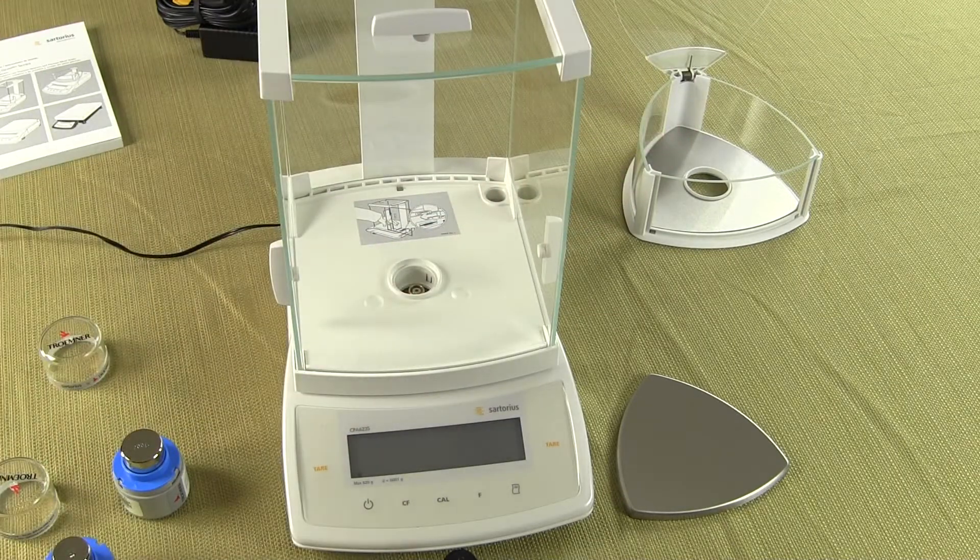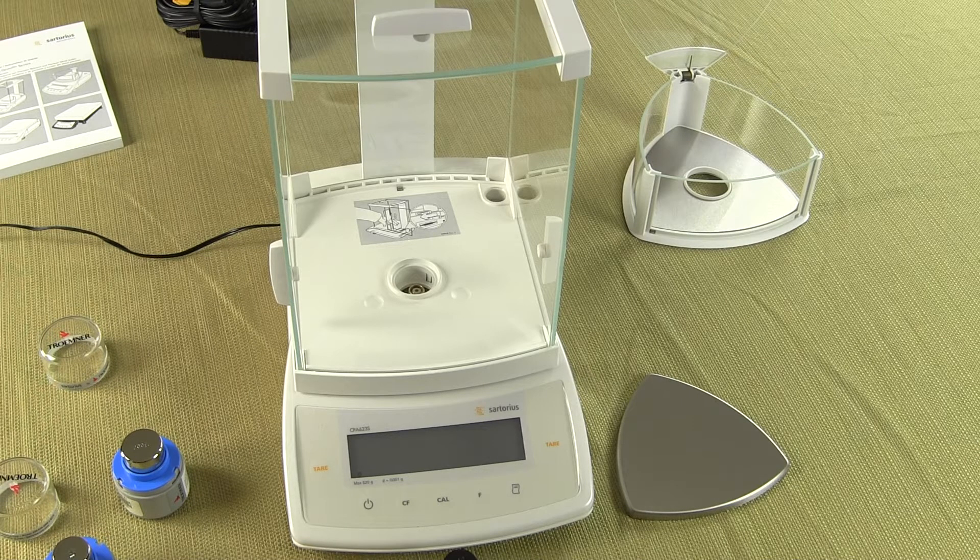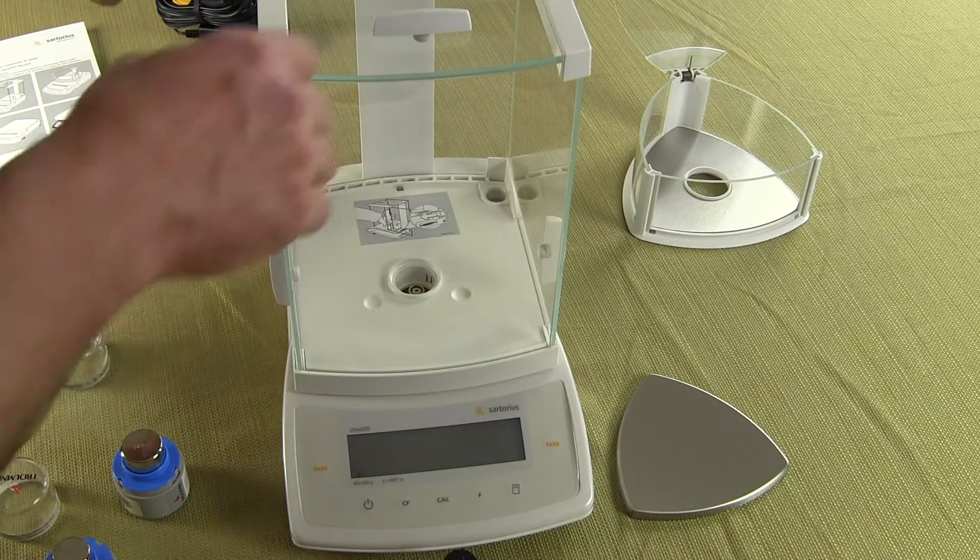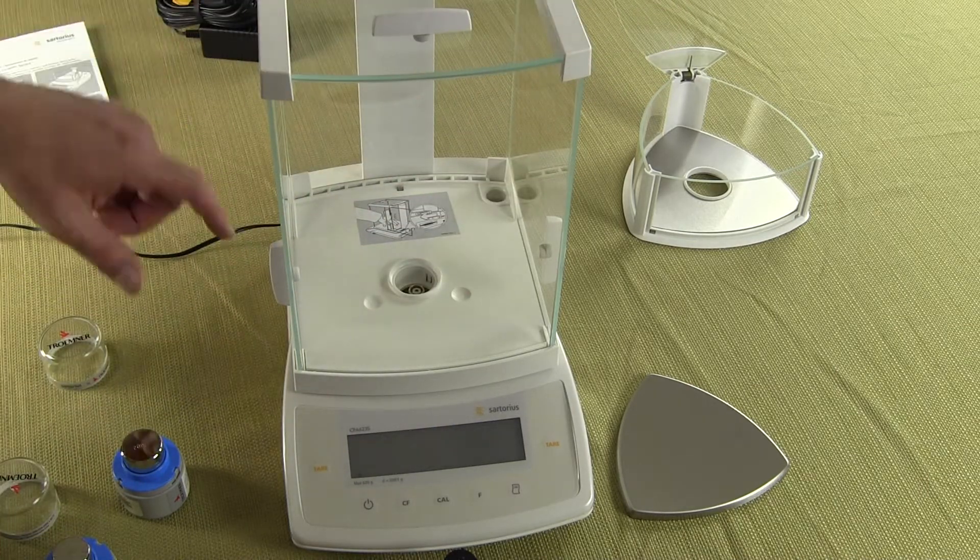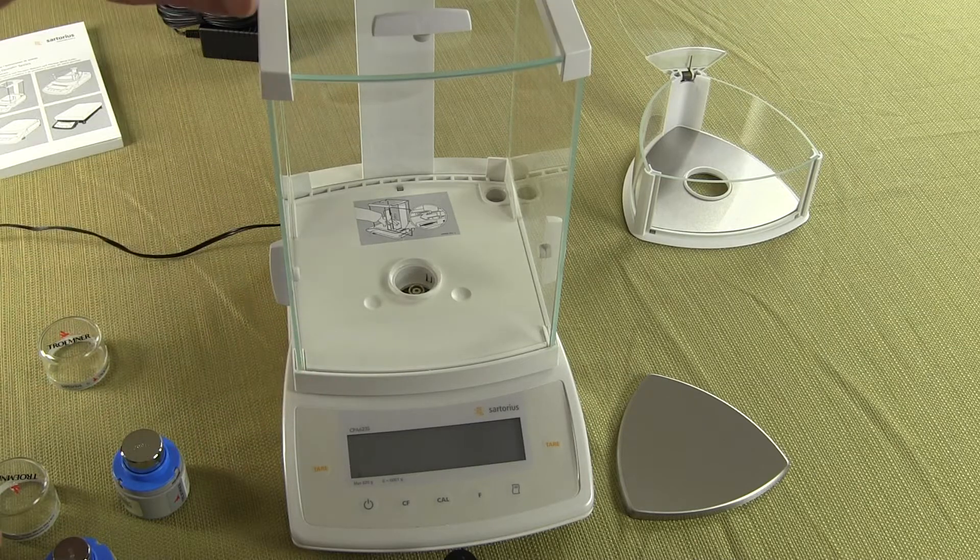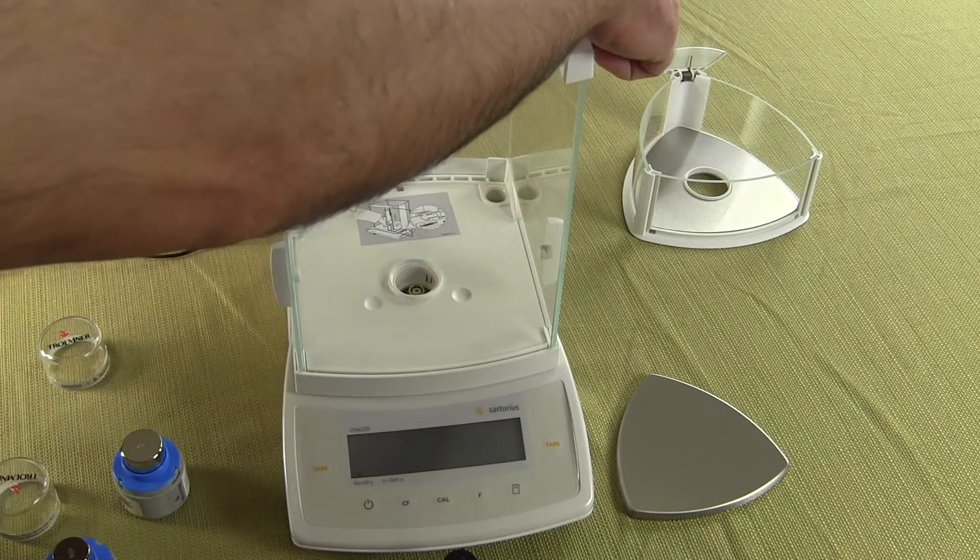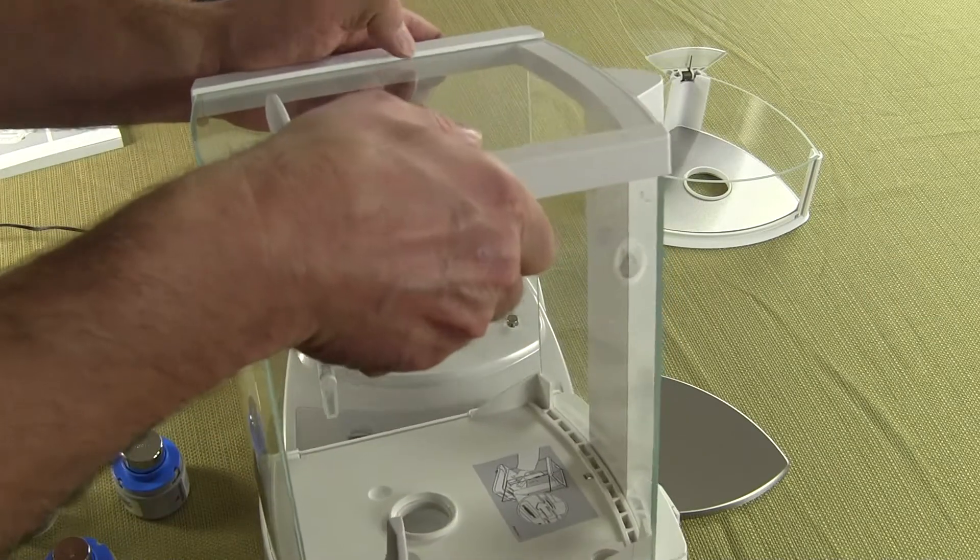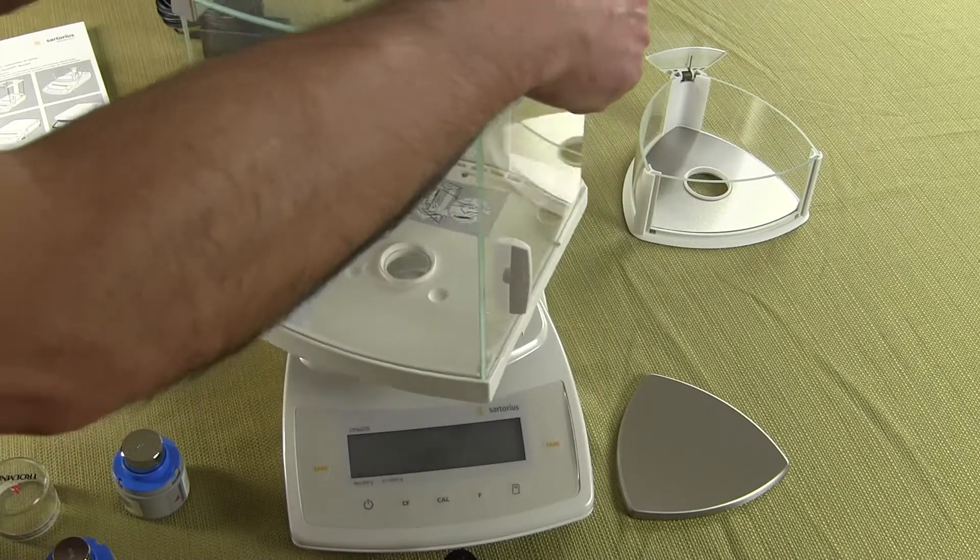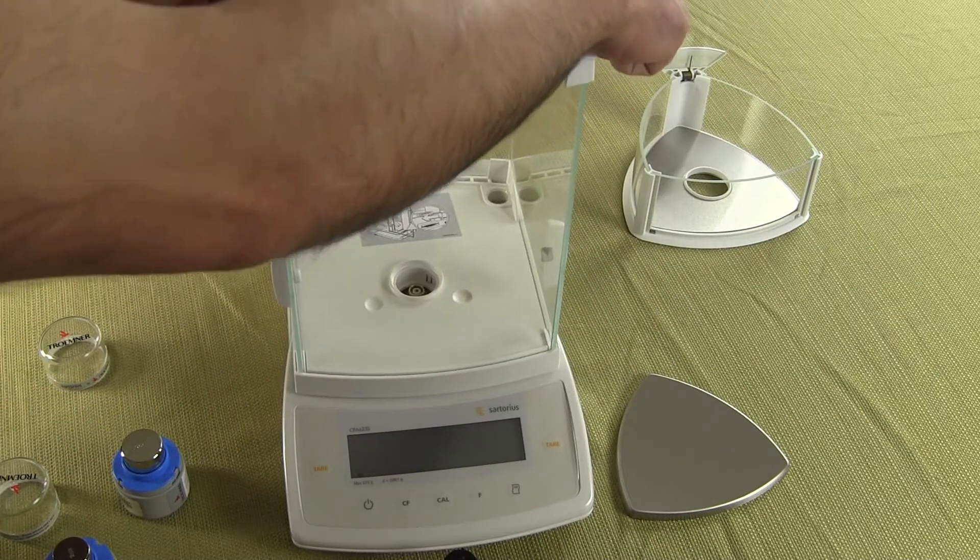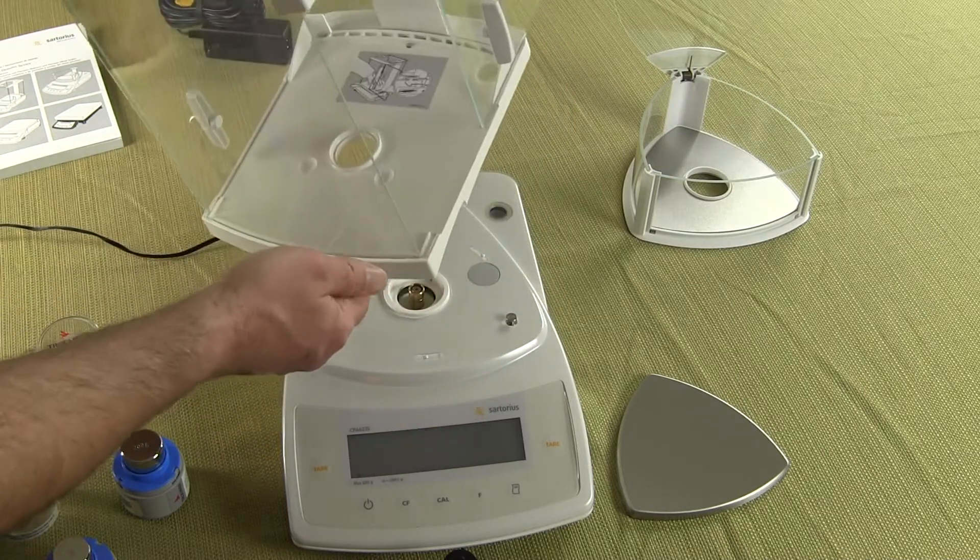So this here is the optional draft shield that Sartorius offers. The exact part number on this optional square draft shield is a YDS01CP and this is going to give you basically 9.37 inches from the top of the weigh pan to the top of the glass draft shield. So this guy here, this is your optional square draft shield and it works the same way basically on the bottom of this draft shield. Now again this is an optional accessory, I just wanted to show it to you.